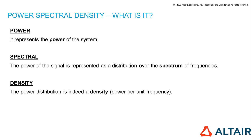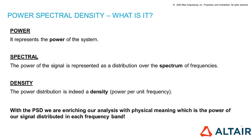The third word is density, because this power distribution is indeed a density. When we talk about density, we are usually thinking at mass per unit volume. This time, instead, we are referring to power per unit frequency. So, if we think of the discrete Fourier transform as a change of basis, now with the power spectral density, we are enriching our analysis with physical meaning, which is the power of our signal distributed in each frequency band.